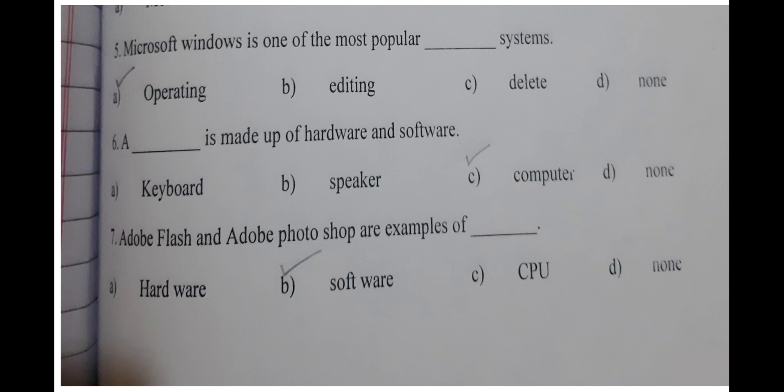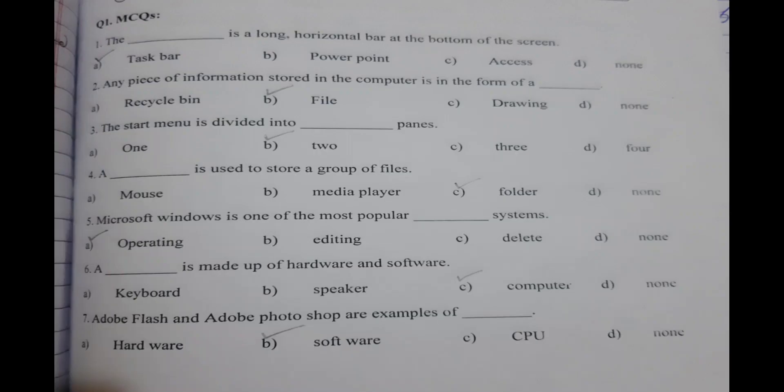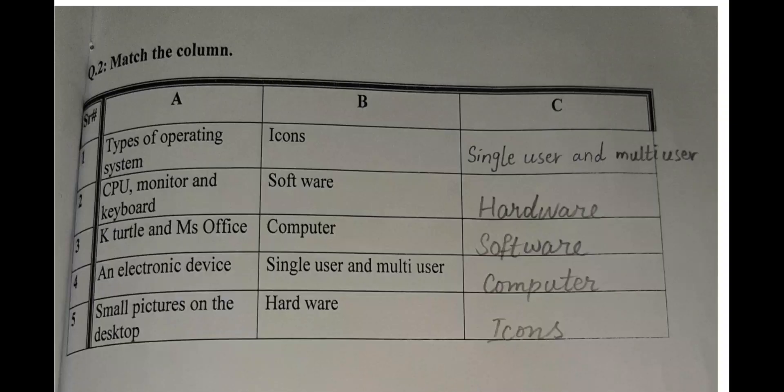Adobe Flash and Adobe Photoshop are examples of software, as I have told you - the work you do on the computer screen is called software. This worksheet has seven MCQs. Let me review the answers again: First answer is taskbar, second is file, third is two, fourth is folder, fifth is operating, sixth is computer, and seventh is software.